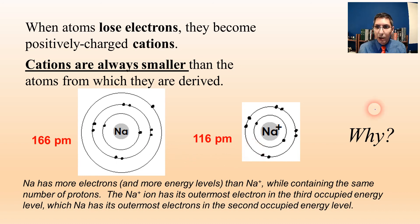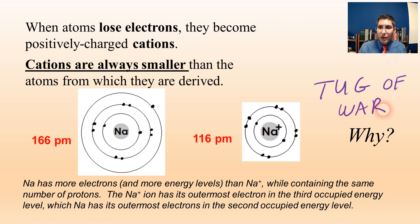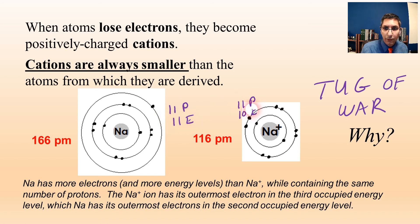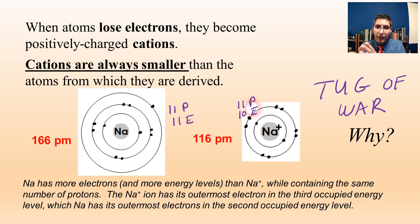Think of this as a tug of war. The job of the protons is to keep the electrons from flying away. Both sodium and its cation have 11 protons, but the cation has only 10 electrons. So the protons are winning — they're pulling those energy levels in much more tightly, resulting in a much smaller ion. In the neutral atom, it's more balanced, so neither side is winning and the atom is larger.